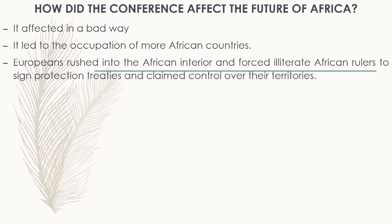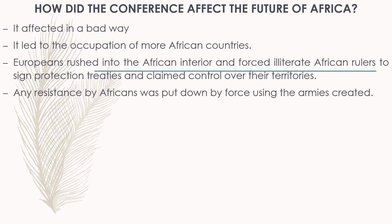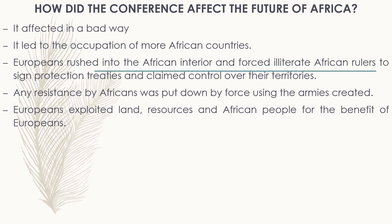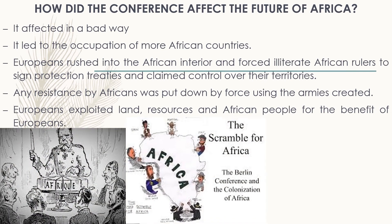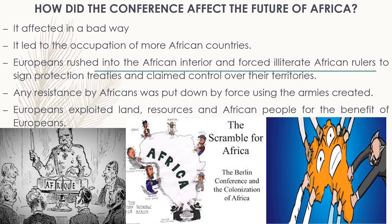Europeans forced illiterate African rulers to sign protection treaties and claimed control over their territories. Any resistance by Africans was put down by force using the armies they had created. Europeans exploited land, resources, and African people for their own benefits.